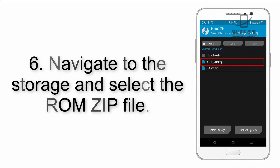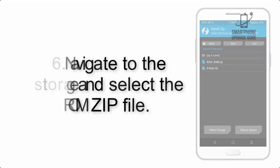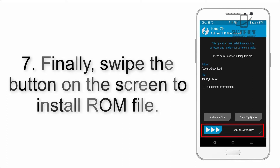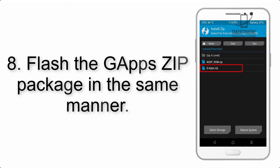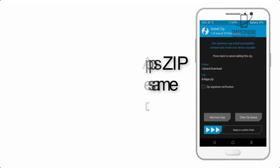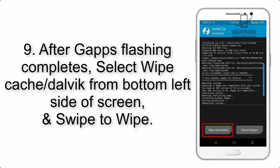Step 5: Go back to the recovery main screen and tap on the Install button. Step 6: Navigate to the storage and select the ROM zip file. Step 7: Swipe the button on the screen to install the ROM file. Step 8: Flash the gapps zip package in the same manner.